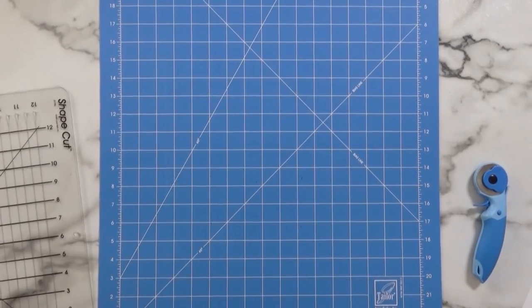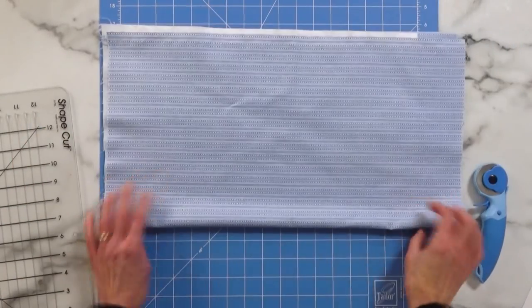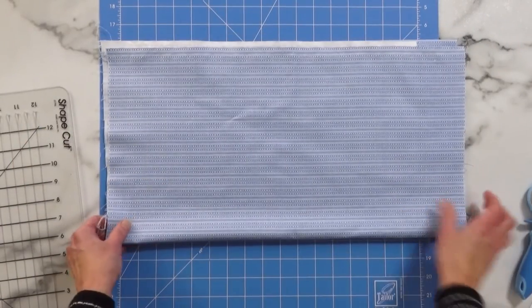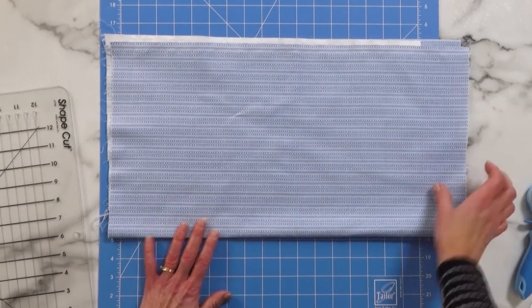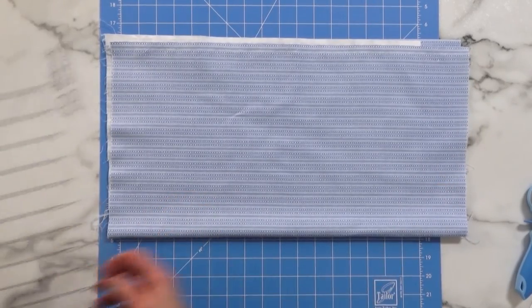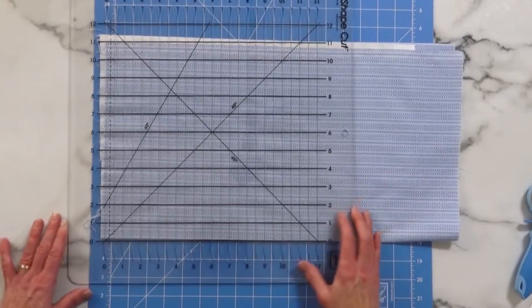Our binding is specified in our instructions. It needs to be three and a half inches wide and we need eighty inches of three and a half inch strips per pillow. So I'm going to use the shape cut to cut my binding.